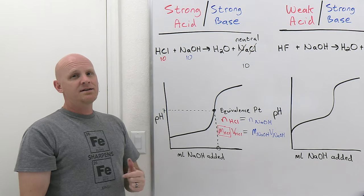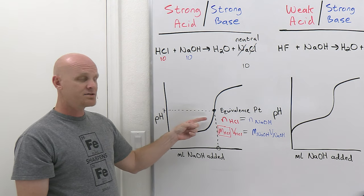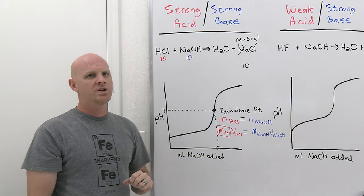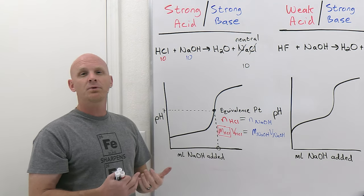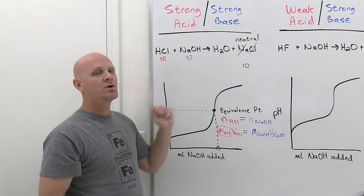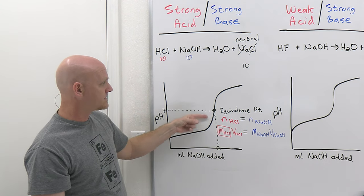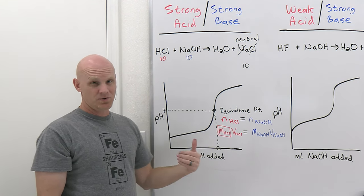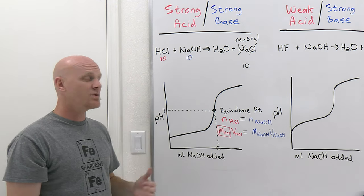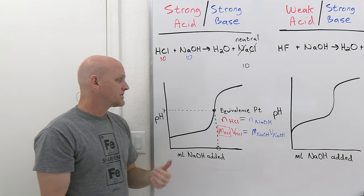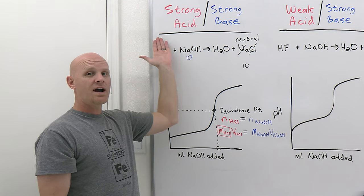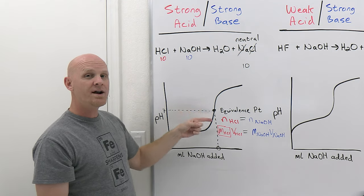One more thing about our indicator: you want it to change colors right around the equivalence point. Indicators don't change color over a small pH window — it's actually over a pretty significant jump, usually a couple of pH units. But that's fine because the pH jumps very quickly right across the equivalence point, often over just a drop or two of NaOH. For a strong acid/strong base titration, you'd want an indicator that changes color in roughly the pH 6 to 8 range. Phenolphthalein is a common example of a good indicator for this type of titration.